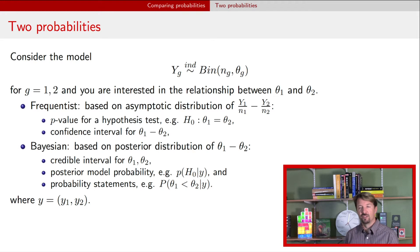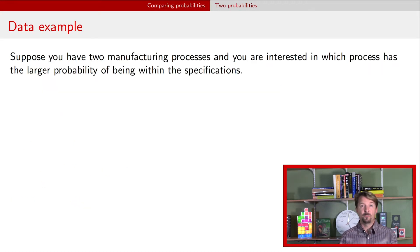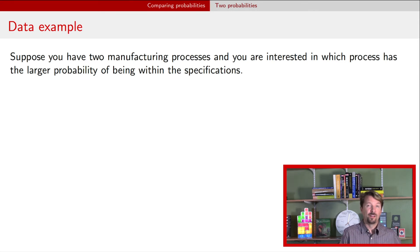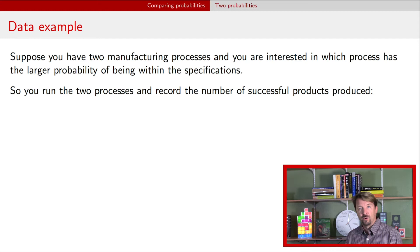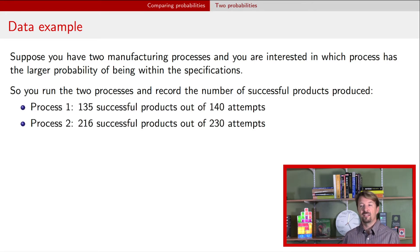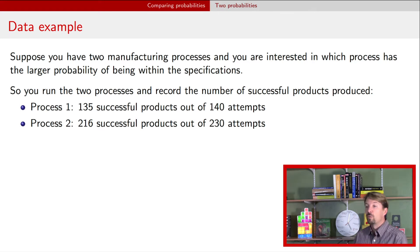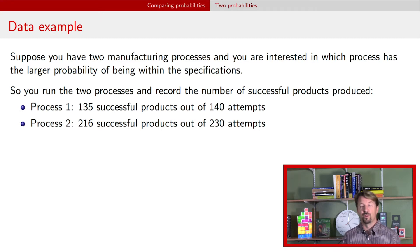Let's get an example. Suppose you have a manufacturing process and there are two different specific processes that can be used to manufacture a particular item. You're interested in which of these two processes is better in the sense of generating the product within specifications more often. You run trials with each process: process one had 135 successes out of 140 attempts, and process two had 216 successes out of 230 attempts. Now you want to say something about whether process one is better than process two or not.